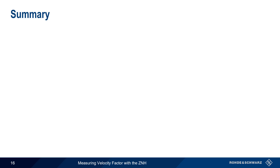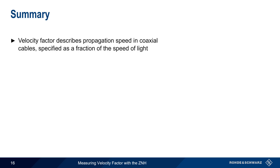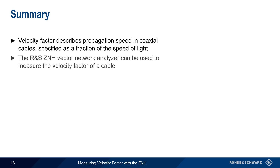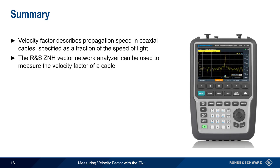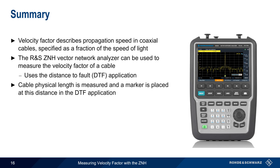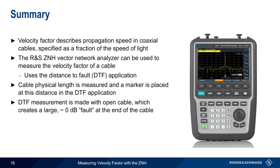Let's end with a brief summary. Velocity factor describes the propagation speed of signals within a coaxial cable and is specified as the fraction of the speed of light in a vacuum. The Rohde & Schwarz ZNH vector network analyzer can be used to measure velocity factor using its distance-to-fault functionality. The cable's physical length is first measured and a marker is placed at this distance in the DTF application. When the DTF measurement is run on an open or un-terminated cable, this will cause a large, near 0 dB fault at the open end of the cable. Velocity factor can then be determined by varying the user-defined velocity factor until this end-of-cable fault coincides with the marker placed at the known length of the cable.